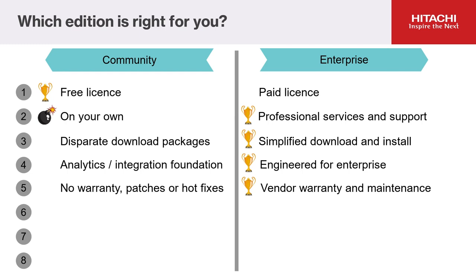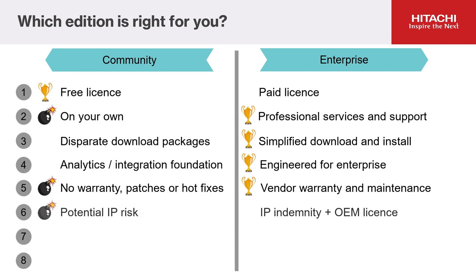A recent example was the Apache Log4j vulnerability. This is lacking for Community, and is a real risk if being used in production. Many organisations use Pentaho within products or services they are providing to their customers. It is possible for open source elements of the solution to infringe IP ownership by third parties. With Enterprise, this risk is managed by Hitachi Vantara, and our customers are indemnified. We also have an OEM licensing option, which provides a highly flexible way for customers to use Pentaho within their own products.